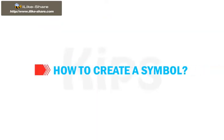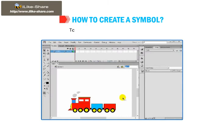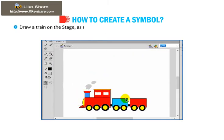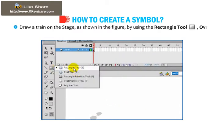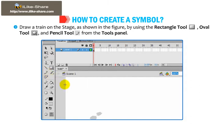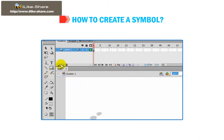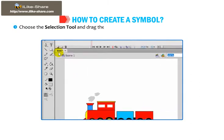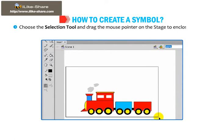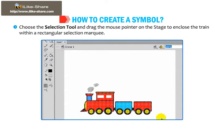Let us learn how to create a symbol. To create a symbol, follow these steps. Draw a train on the stage as shown in the figure by using the Rectangle tool, Oval tool, and Pencil tool from the tools panel. Then choose the Selection tool and drag the mouse pointer on the stage to enclose the train within a rectangular selection marquee.